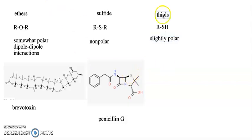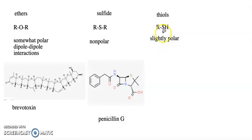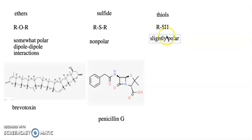We can also talk about thiols, which have the general structure R-S-H, looking a lot like alcohols (R-O-H). But since sulfur is less electronegative than oxygen, they tend to be less polar than alcohols — I'd characterize them as slightly polar. They have some dipole-dipole interactions but don't really hydrogen bond like alcohols.